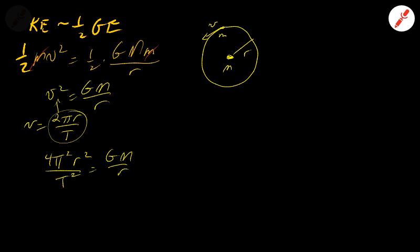Bringing the r over and dividing everything else through, I get the radius cubed equals gravitational constant, mass of the sun, the period of orbit squared, over 4π², and this allows us to find the period of, or the size of the orbit.